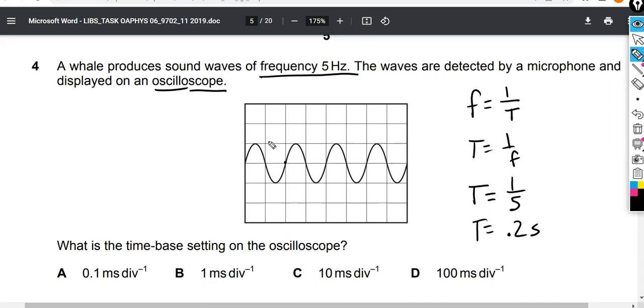Sometimes these are centimeters, sometimes they're millimeters. Here you can see it's just division. So each one of these is a division. We know that here we have one wave per two divisions.